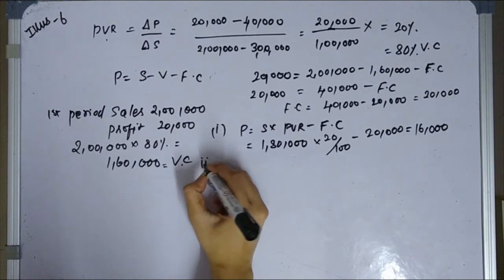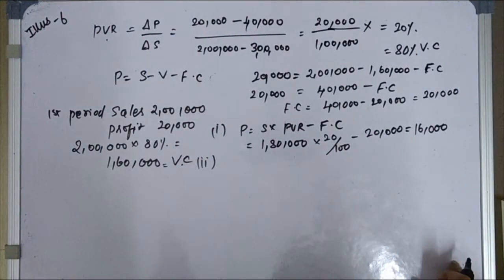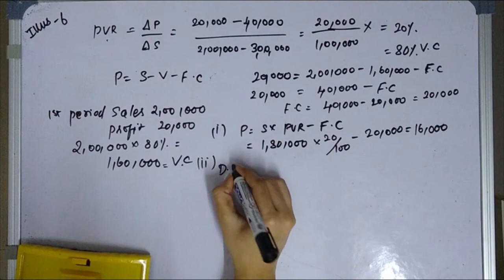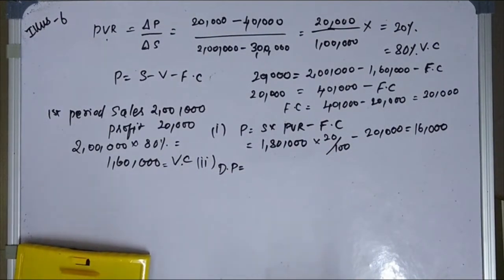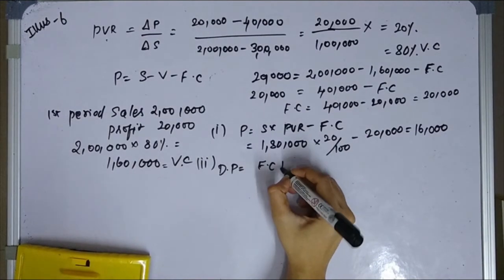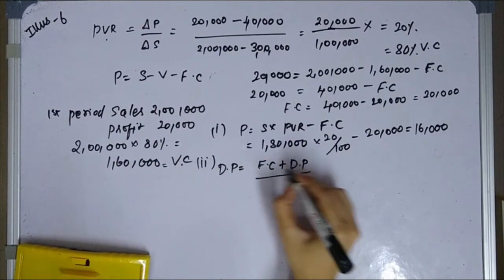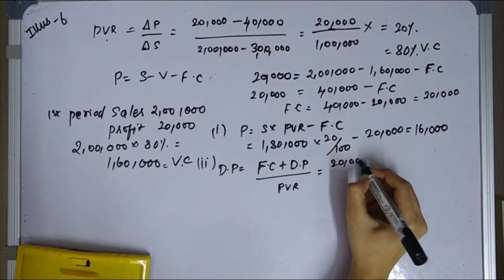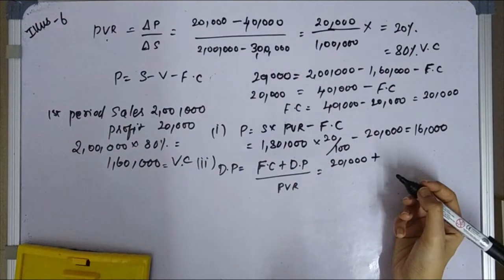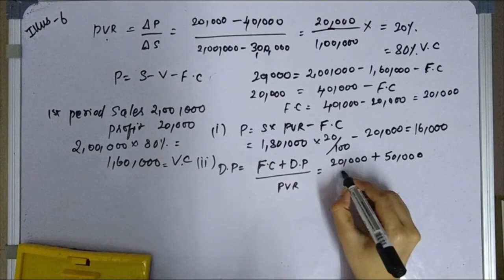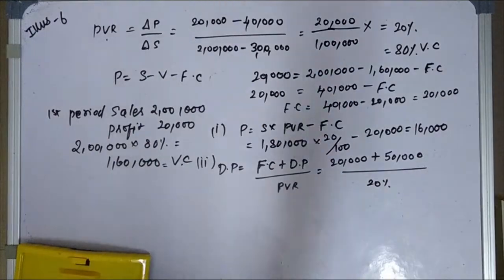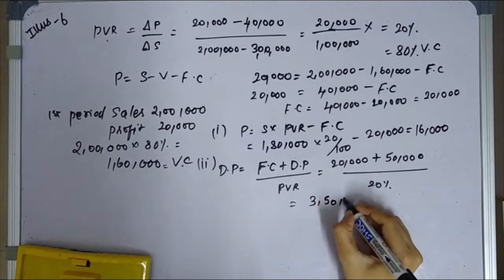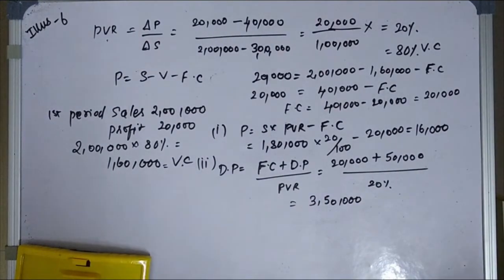For the second part, the desired sales formula is: fixed cost plus desired profit divided by PVR. Fixed cost is 20,000 plus desired profit of 50,000, divided by PVR of 20 percent. This gives you 3,50,000 as the required sales amount.